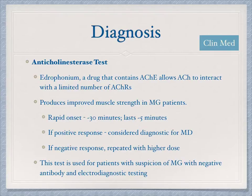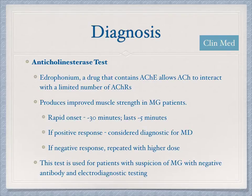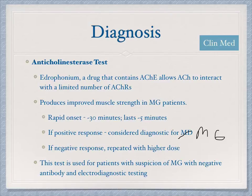Edrophonium is an acetylcholinesterase medication that can be used as a diagnostic test for myasthenia gravis. It has a relatively short half-life, with onset of about 30 seconds and lasting about 5 minutes. You're looking for an improvement of the patient's weakness — a positive response is considered diagnostic for MG. A negative response can be repeated with higher doses. This test is used for patients with suspected MG who have a negative antibody test and a negative electrodiagnostic test.